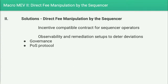Potential solutions include writing contracts between the governance layer and the operator, or setting up observability and remediation — where in the case of a small operator set, a committee related to governance could oversee behavior, or one could decentralize further with incentives in a proof-of-stake type protocol. But here the rollup becomes tightly coupled to the L1 setup.